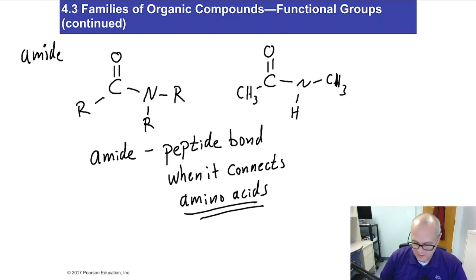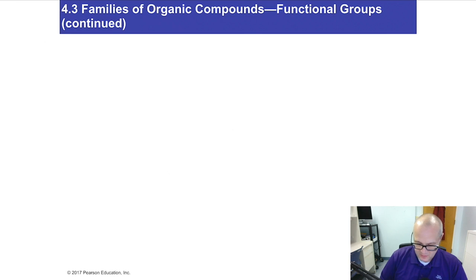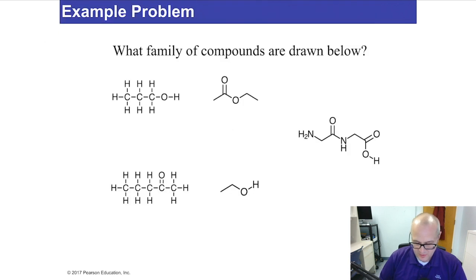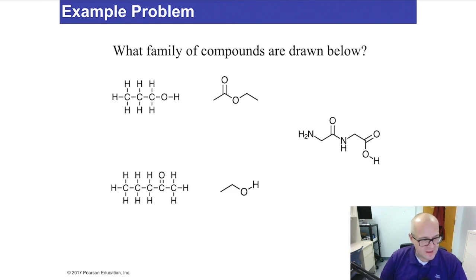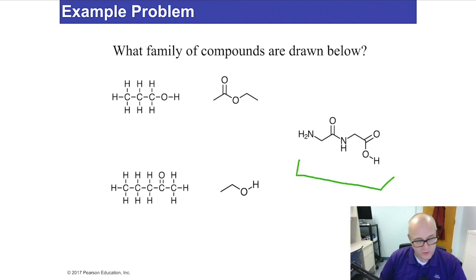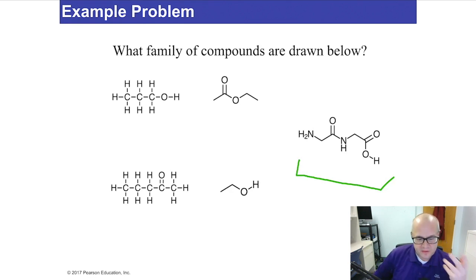Amides are also called peptides if they're combining amino acids — and those are your families. Now here's an example problem: find the family of compounds drawn in each drawing below. Pause the video and try to figure out what families of compounds we're looking at. Keep in mind that one contains more than one — actually three different families of compounds in one molecule.